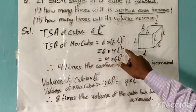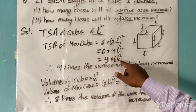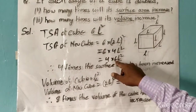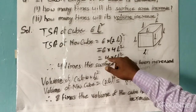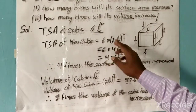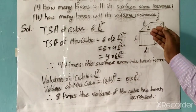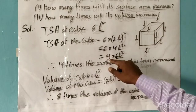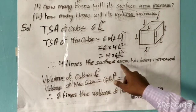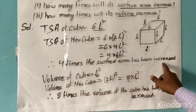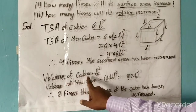This gives 6 into 4L squared. Taking 6L squared as common, 4 is taken outside. So the surface area increases 4 times. Therefore, the total surface area has been increased 4 times.